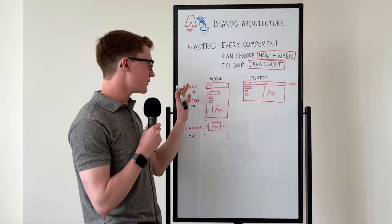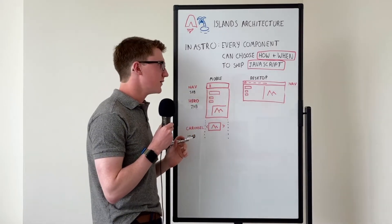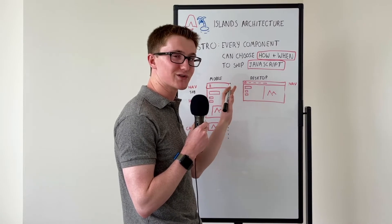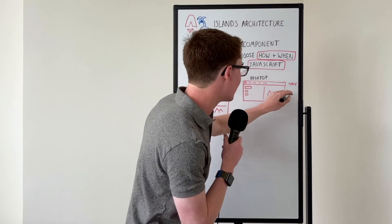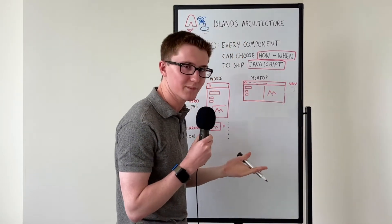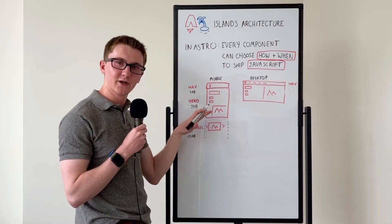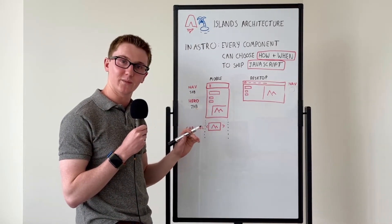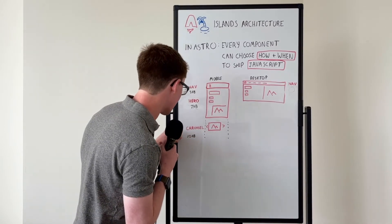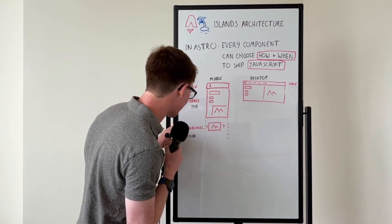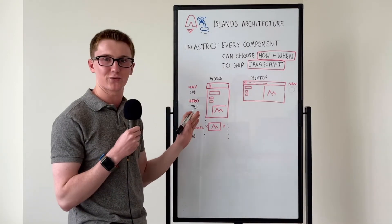Then my nav bar is going to ship some JavaScript for a slide-out menu, but on desktop, since it's just some static links, maybe I can avoid shipping JavaScript entirely with a media query. And then my image carousel is below the fold, so maybe I can wait to load those kilobytes when it scrolls into view. I'll draw a terrible little stopwatch down here to represent that. Only load 10 kilobytes when you scroll down.